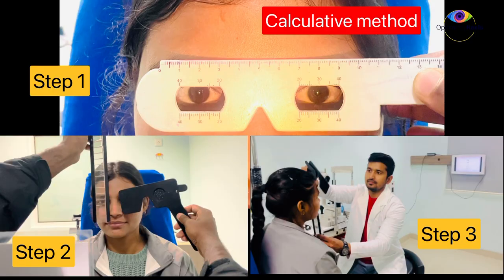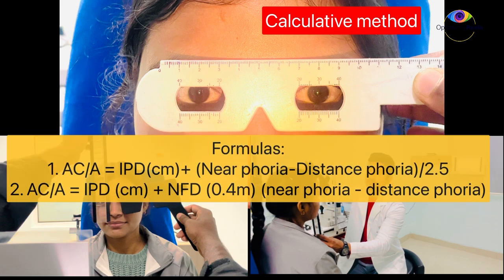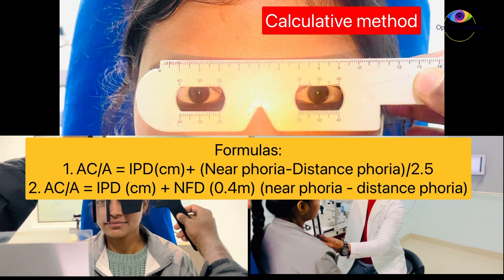Another way to find AC/A ratio is calculated method. This method requires some values like interpupillary distance which should be in centimeters, near phoria and distance phoria. And these values need to be put in either of these given formulas. In first formula, AC/A ratio can be obtained by adding IPD to difference of phoria from near to distance and dividing this with 2.5. Here 2.5 is the accommodative demand for 40 centimeters.